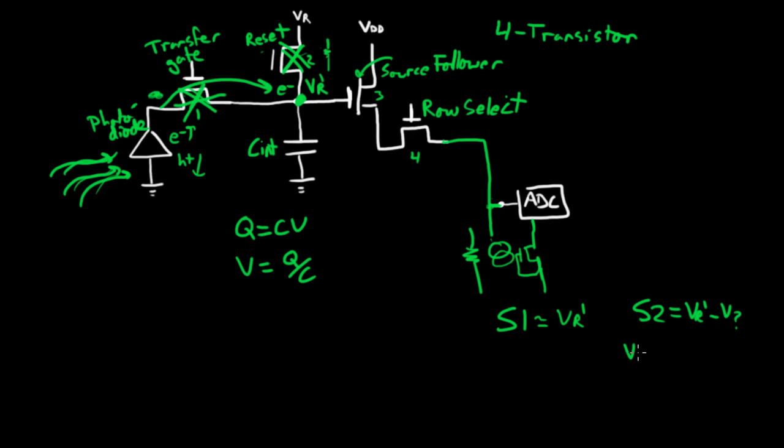It would be equal to Vr prime minus some voltage, where that voltage would be equal to the charge that's, the new charge that's sitting there, the photo charge or dark current charge, divided by Cn. And this Cn is the primary determinant of your conversion gain of this system, microvolts per electron.